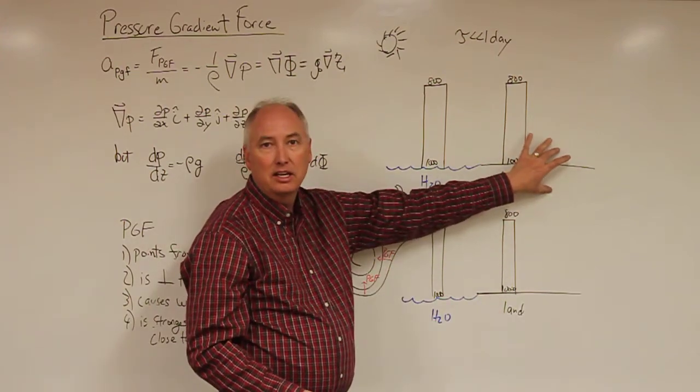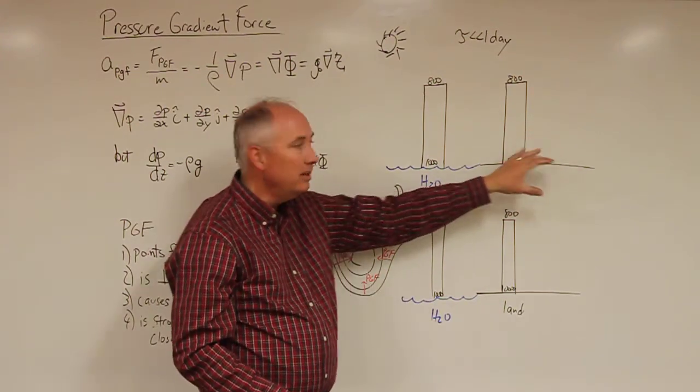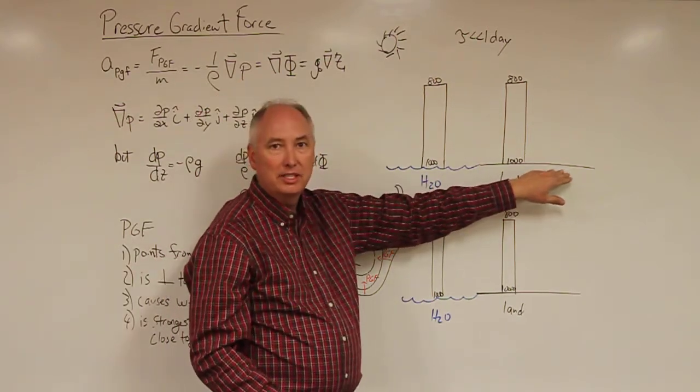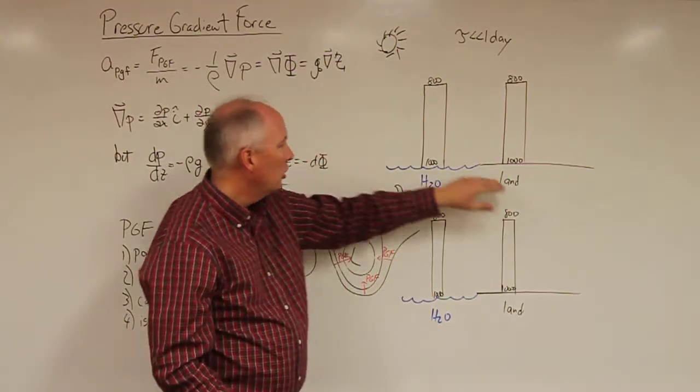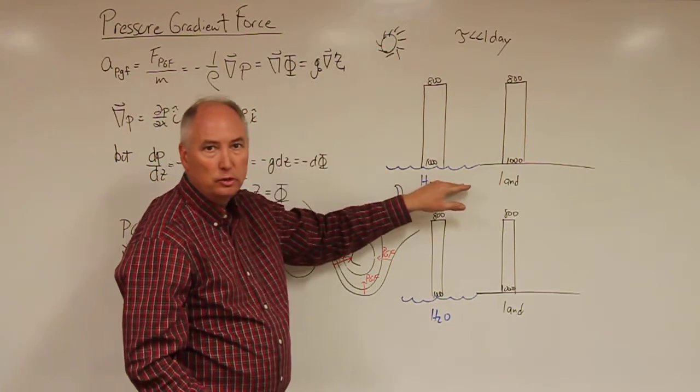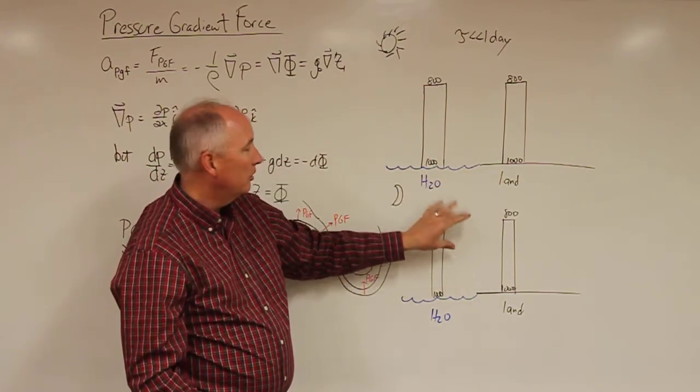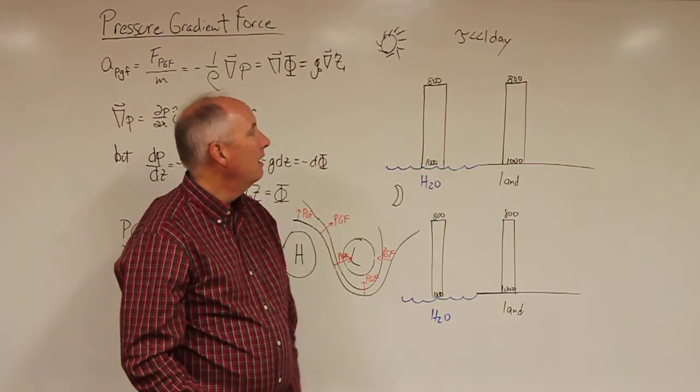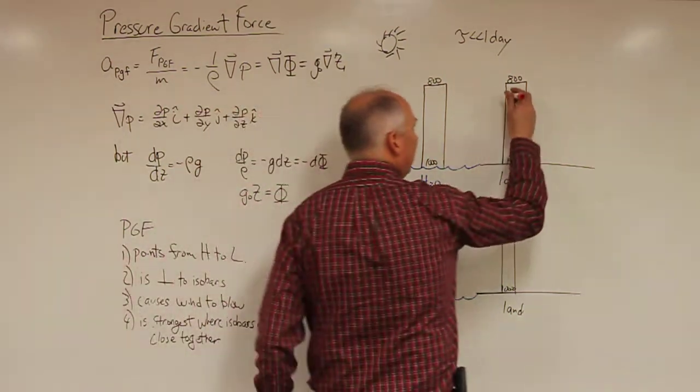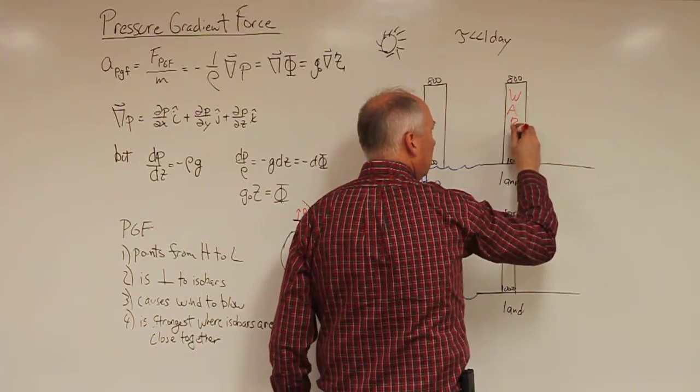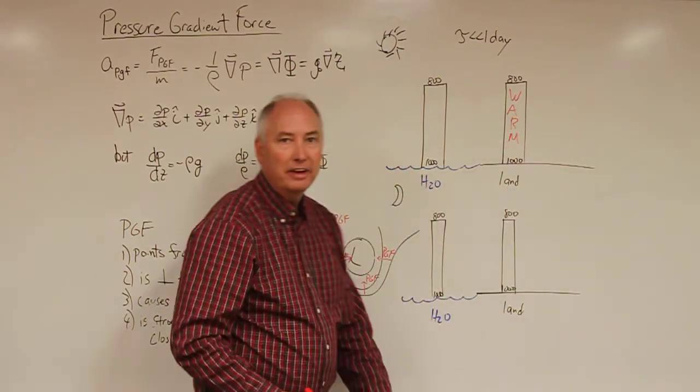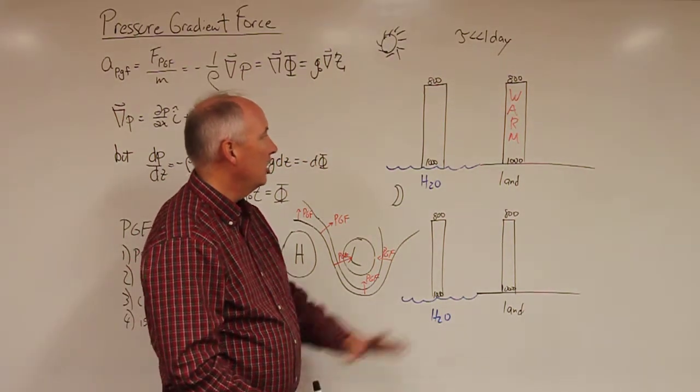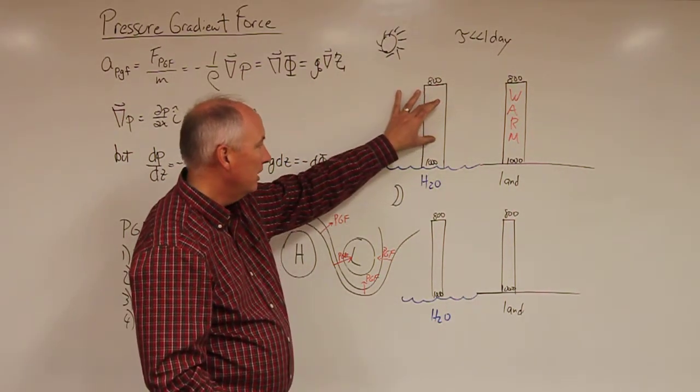But the sun is going to beat down and it's going to warm up the land faster than it is the water. Why is it going to warm up the land faster? Because the land has a lower heat capacity than the water and also the sunlight is being absorbed in the very top layer of the land while that sunlight is penetrating into the water. So the heating is being distributed over a deeper layer of the water.